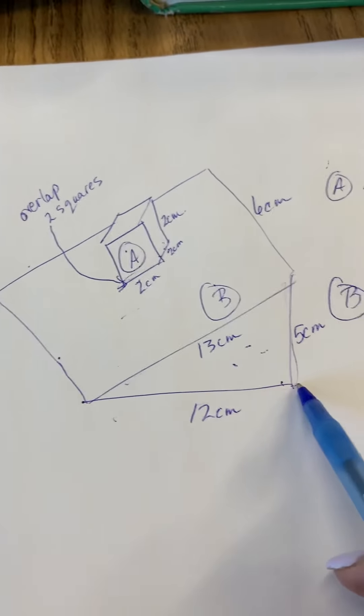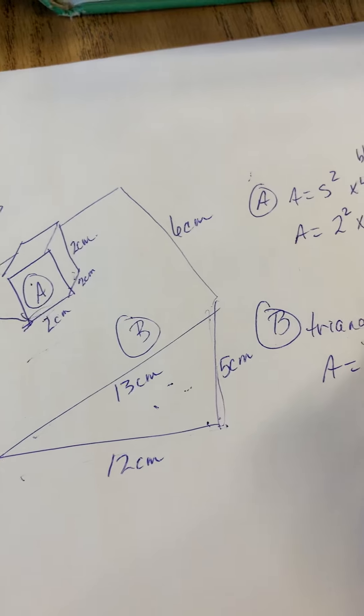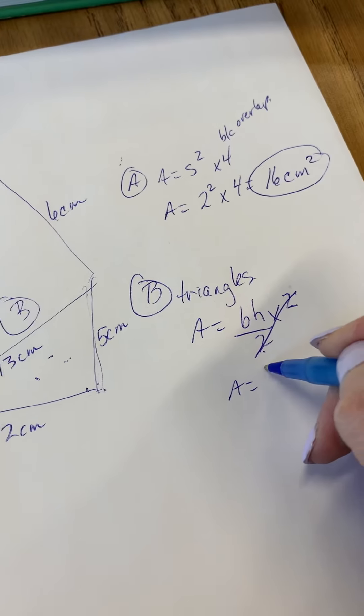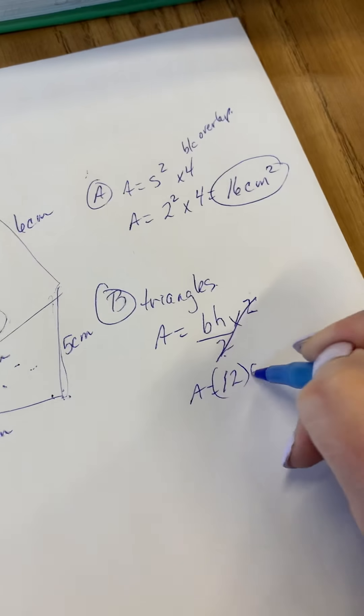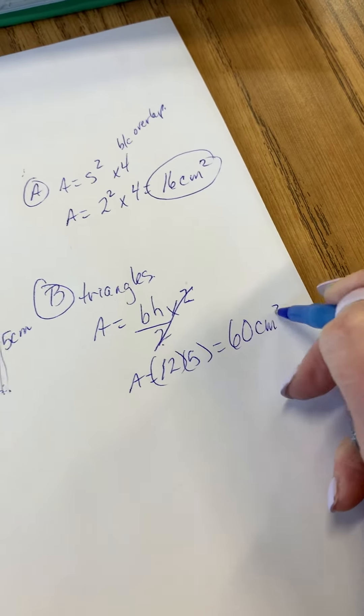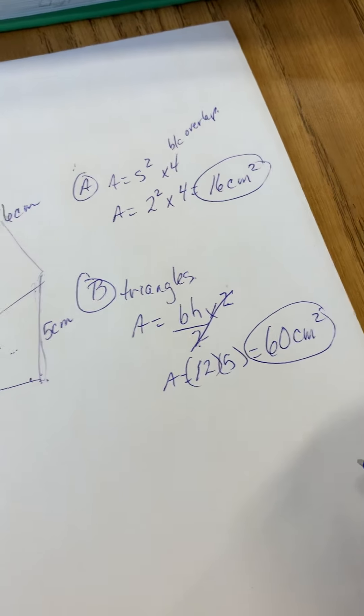So the base of this thing is 12 and the height of this thing is 5, so we're going to go. The area of those triangles is 12 times 5, which is 60 centimeters squared, and I circle that.